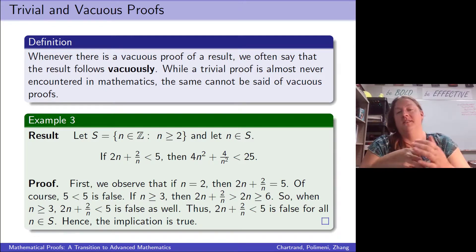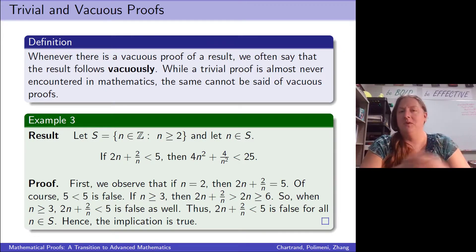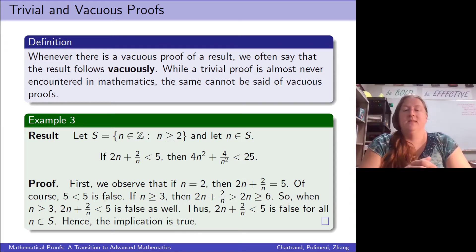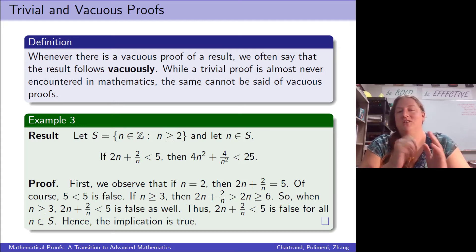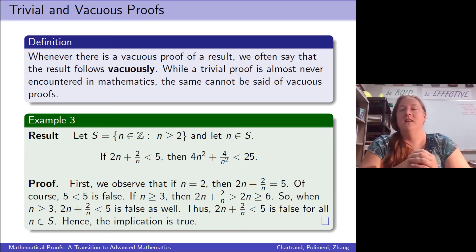Whenever we prove something using a vacuous proof, we say the result follows vacuously. There's another example I'm going to leave for you to work through — you're looking just at that p statement and showing that it's false for all integers n when n ≥ 2.